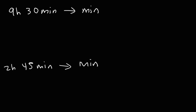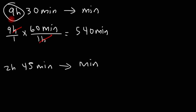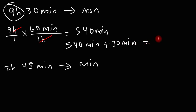Let's begin by converting the hours into minutes. We have 9 hours — multiply that by 60. 9 times 6 is 54, so 9 times 60 is 540. So 9 hours is 540 minutes. We then add 540 and 30, giving us a final answer of 570 minutes.